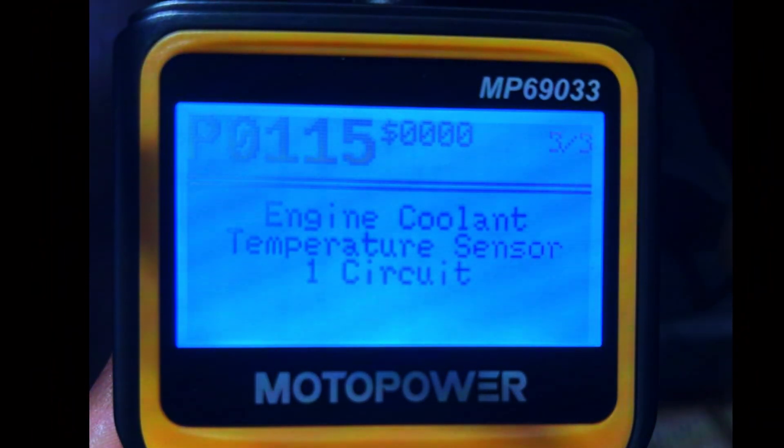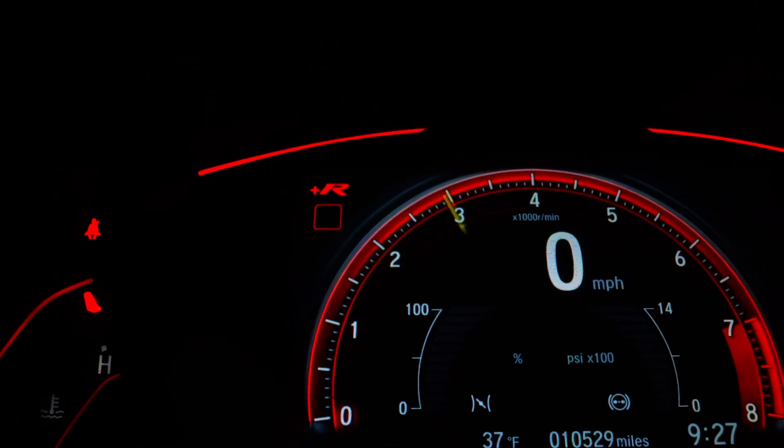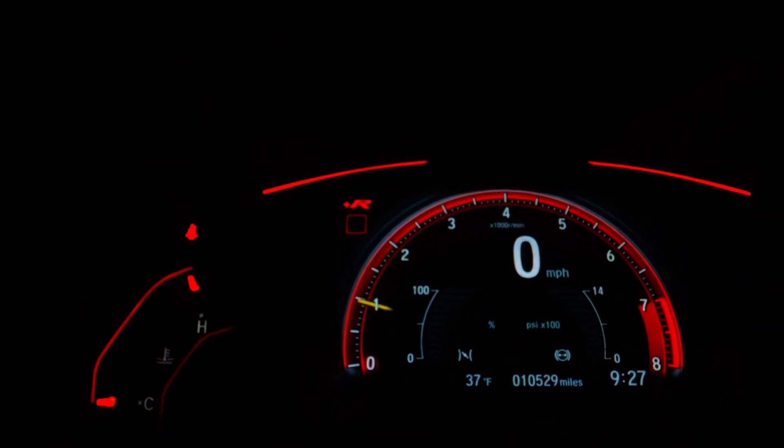After the fix, clear the trouble code from your OBD2 scanner and start the engine. Check if the problem is resolved and the check engine light stays off.